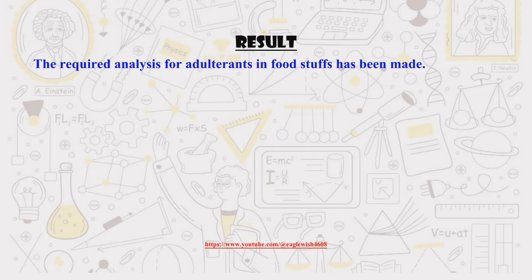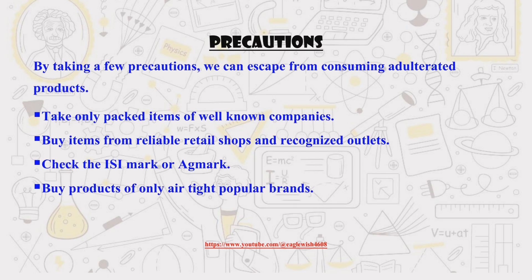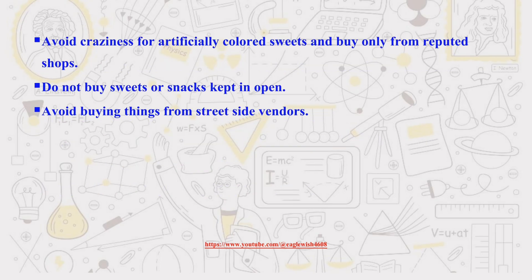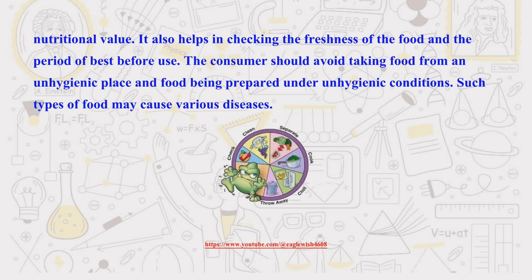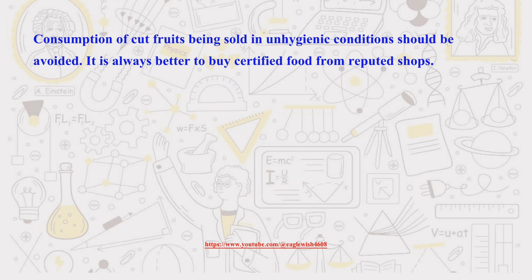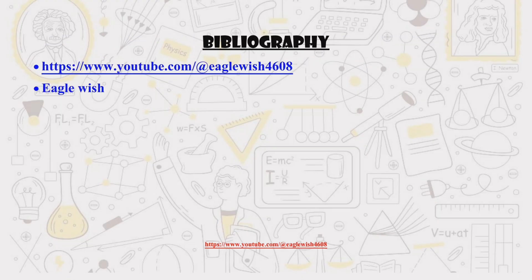The results of our tests show that adulterants have been found in the foodstuffs. Here are some preventive measures that an individual can take to avoid adulterated food. Finally, we'll present a comprehensive result, along with our conclusion which reflects the presence or absence of adulterants in food items. Remember to include a properly formatted bibliography.